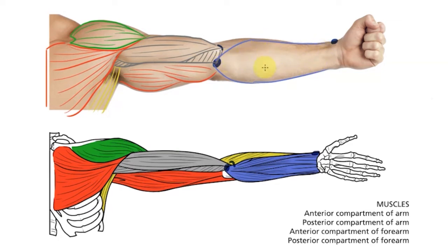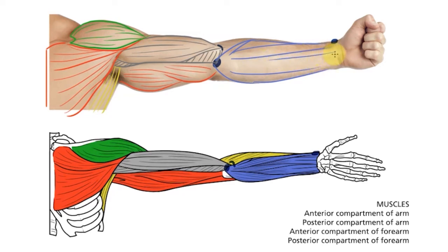First we need to add pronator teres passing laterally to attach to the radius. Then we have our two carpi muscles passing to the bones of the wrist: flexor carpi radialis on the lateral side and flexor carpi ulnaris on the medial side. Between them we have palmaris longus — a muscle not everyone has — and then deep to that, the first of our muscles passing to each of the four fingers: flexor digitorum superficialis.